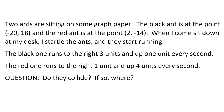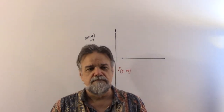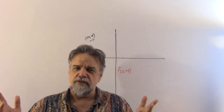The black ant runs every second to the right three units and up one unit — in a straight line, not right then up, just a steady direction of (+3, +1) per second. The red ant, meanwhile, runs to the right one unit and up four units every second. So my question is: do they collide, and if so, where?